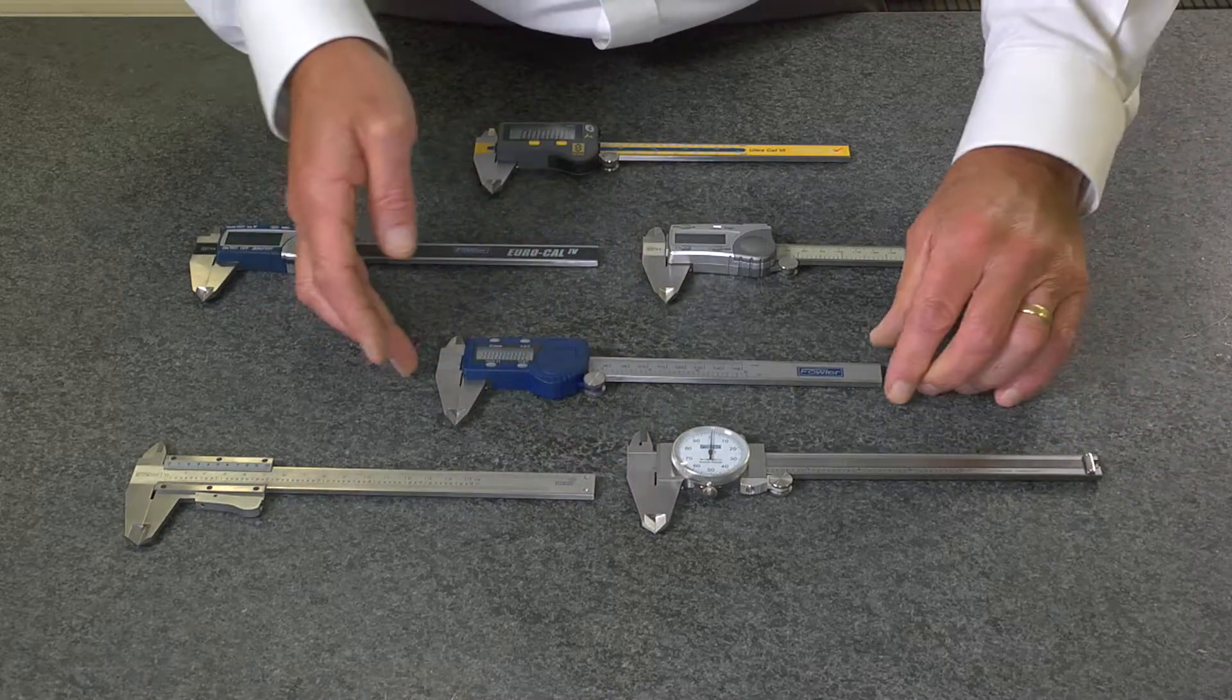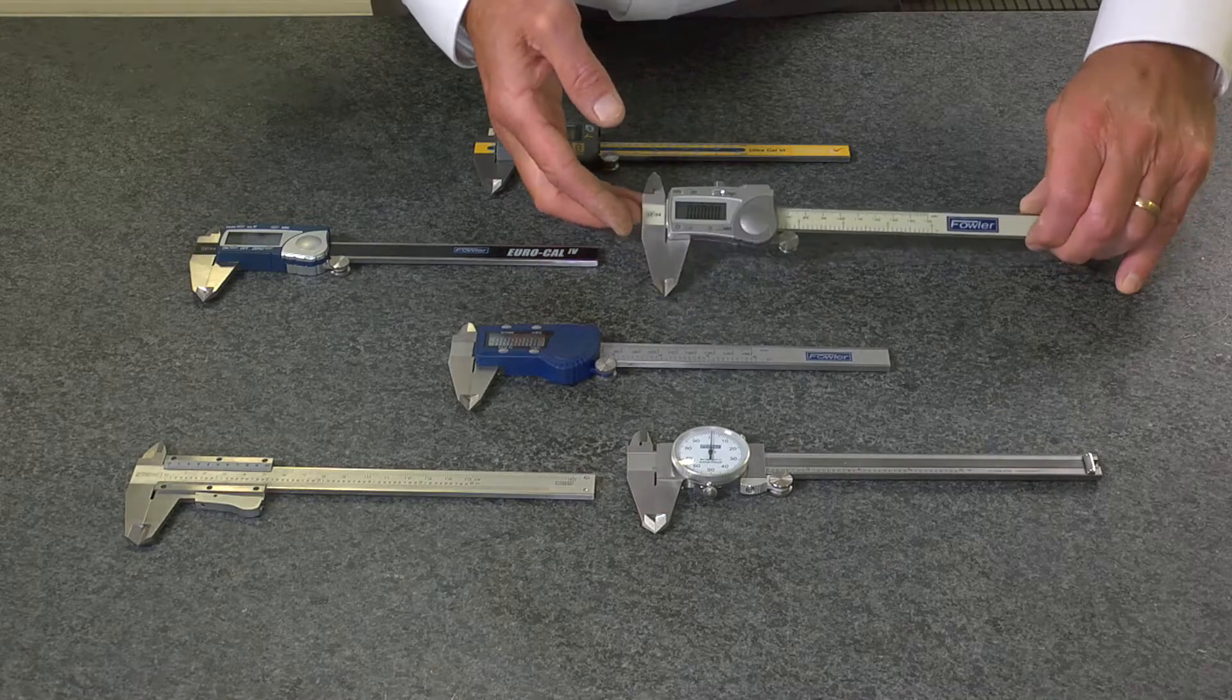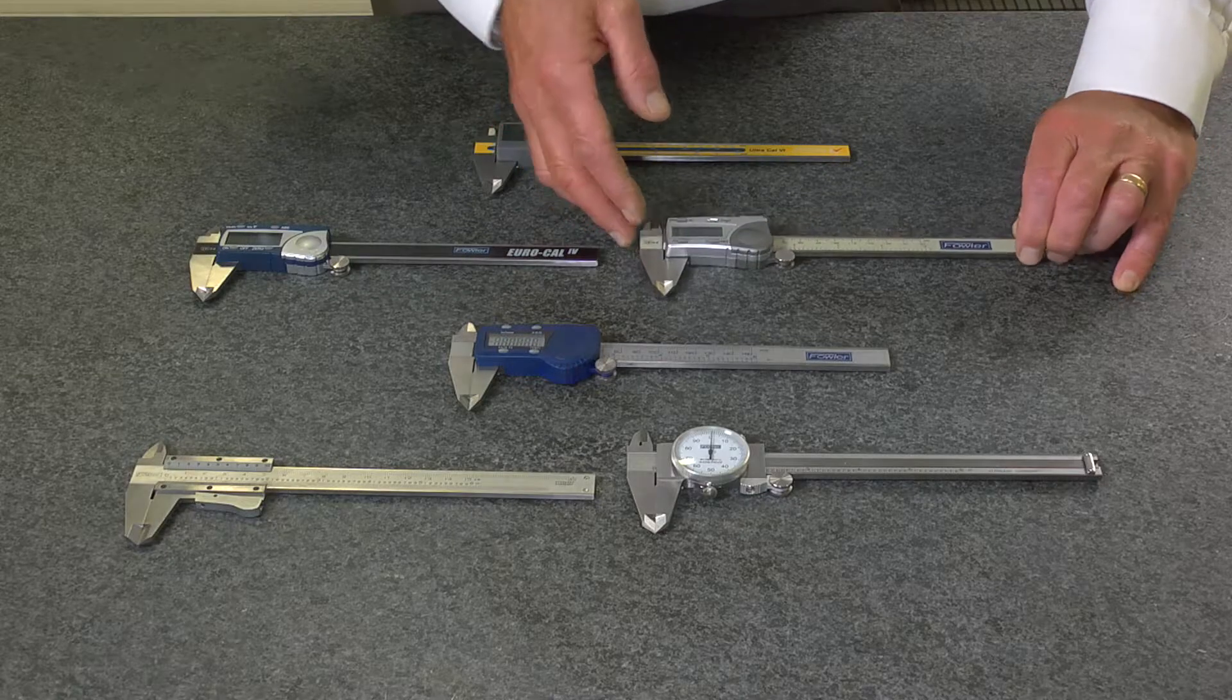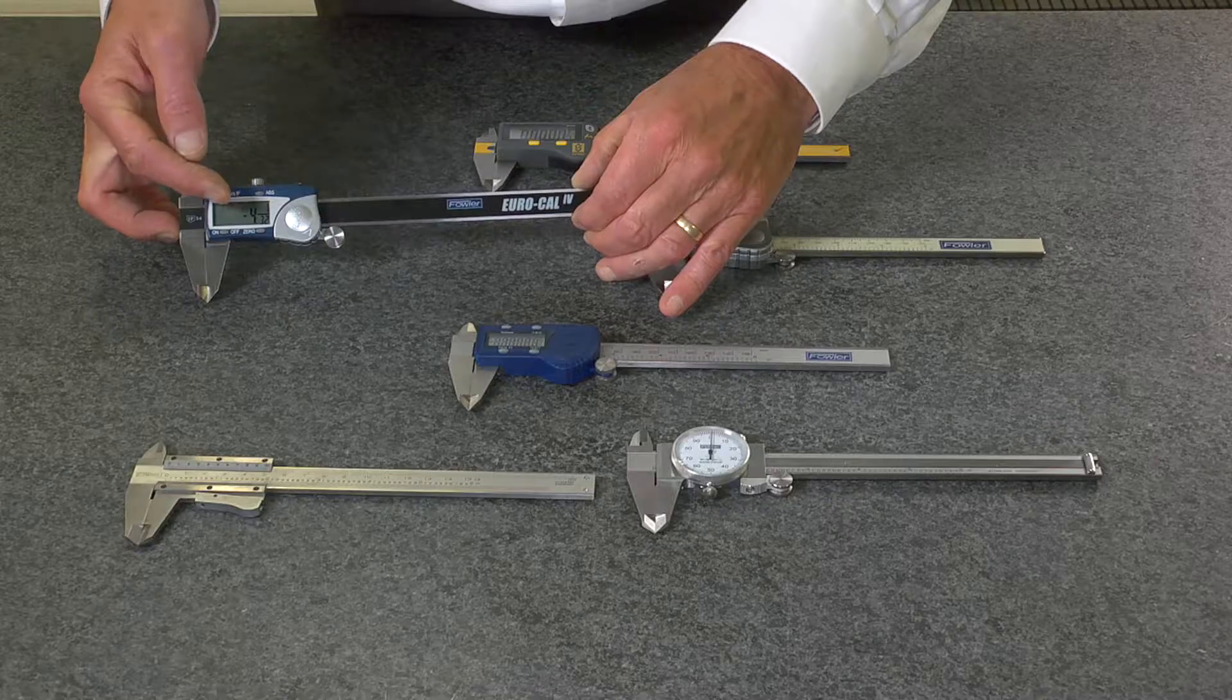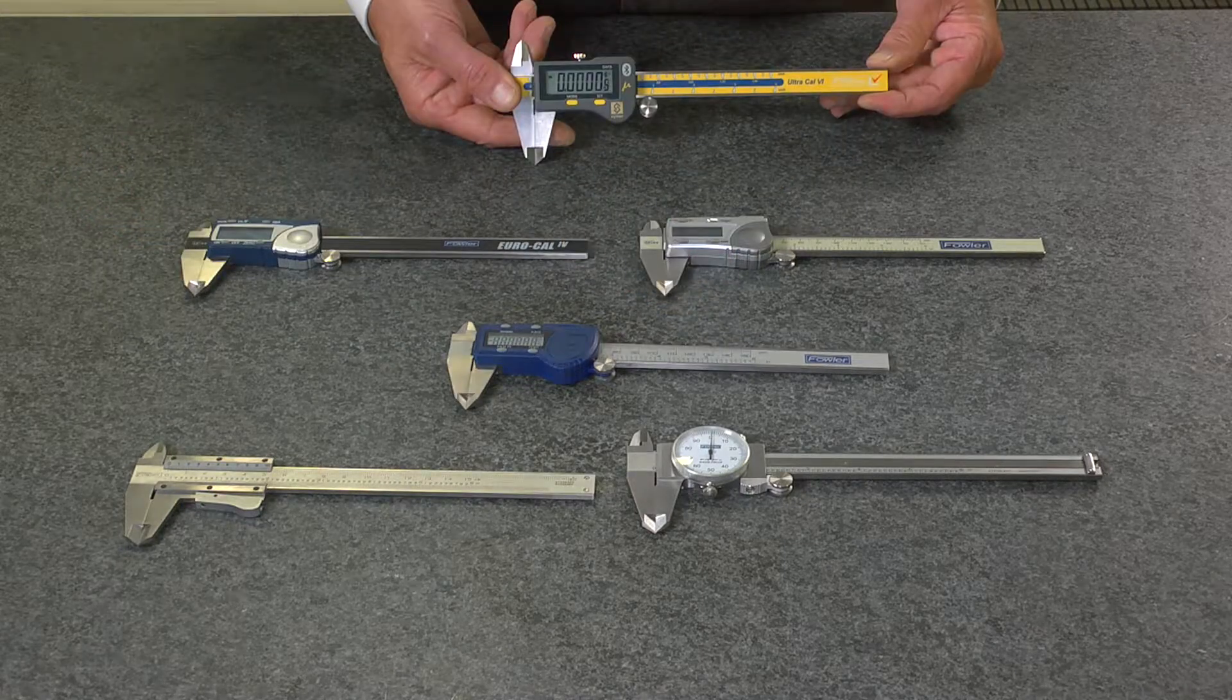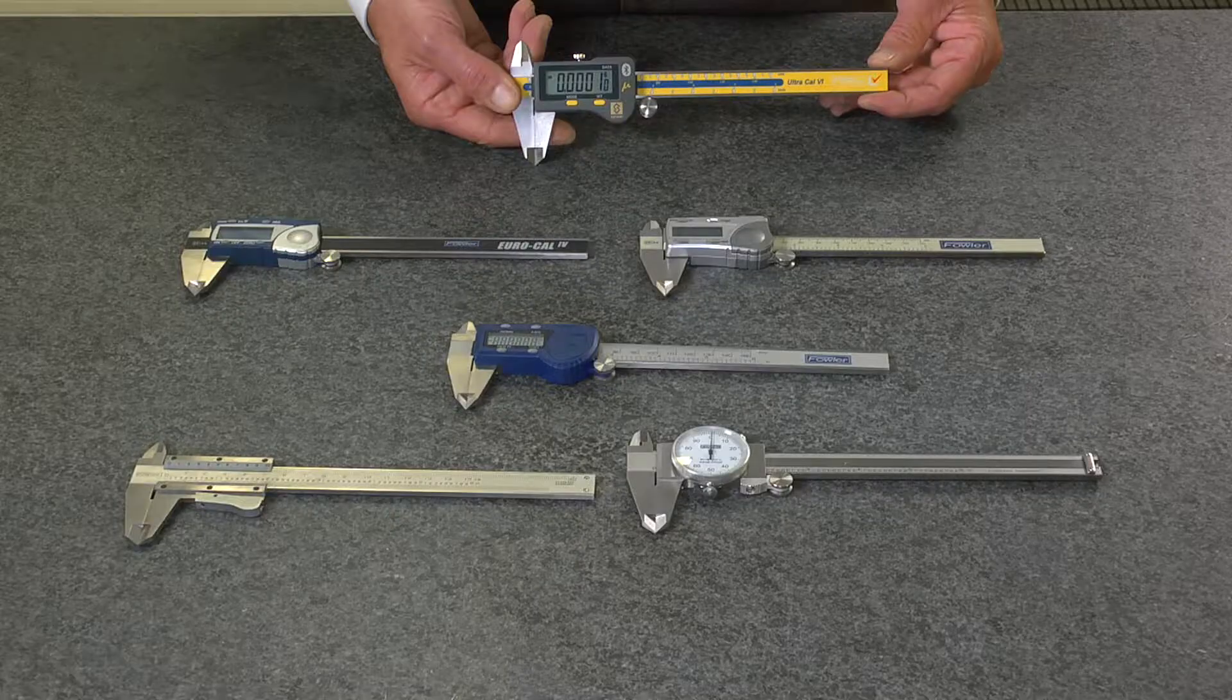Fowler also carries economy calipers and IP54 rated calipers which are protected against fluids and debris. They also carry IP54 rated calipers which feature inch, metric, and fractional readings. Fowler also offers the Silvac UltraCal 6 electronic caliper.